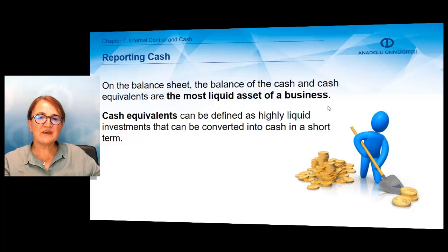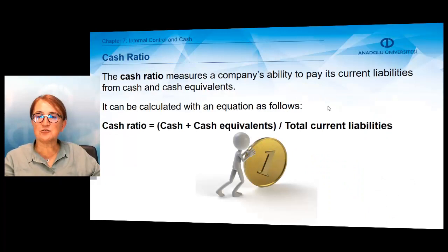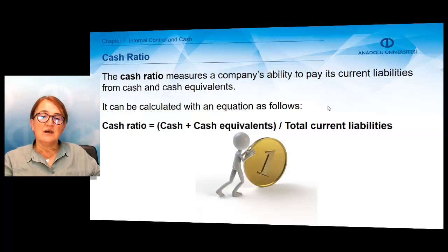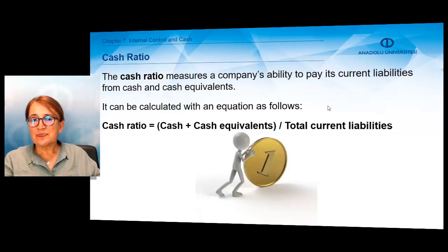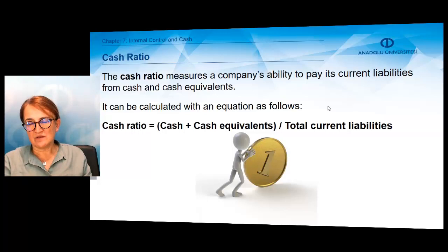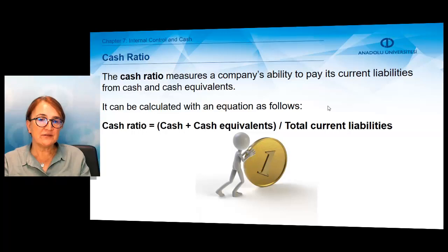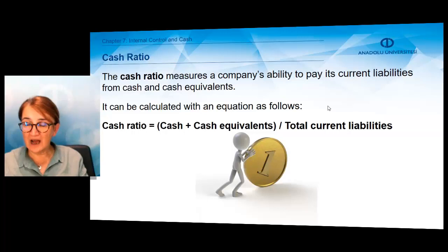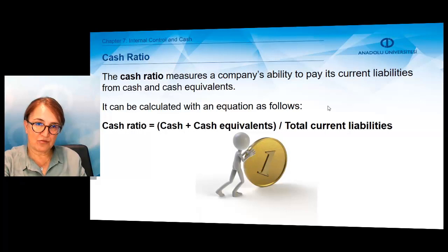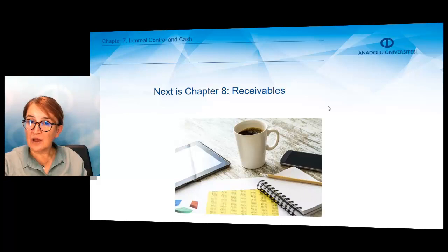Cash equivalents are the most liquid assets of the company. By using this amount, we can calculate one ratio called the cash ratio. This ratio measures a company's ability to pay its current liabilities from cash and cash equivalents. To calculate this ratio, cash and cash equivalents are divided by total current liabilities. It measures how many times we can pay existing short-term liabilities using the company's cash and cash equivalents, making it a very helpful ratio for assessing liquidity and short-term debt paying ability.